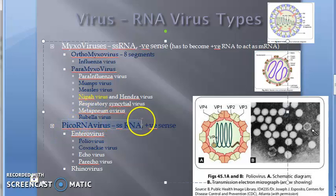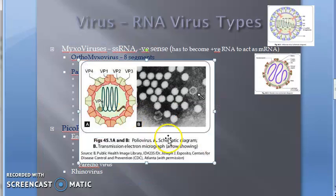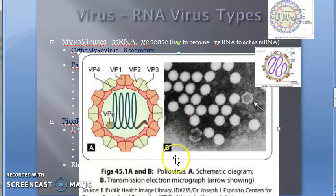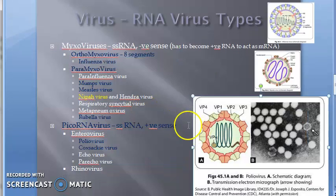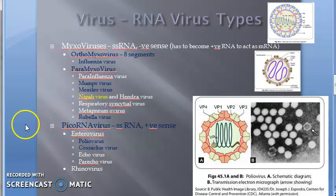Moving on to picoRNA virus. PicoRNA virus has poliovirus — it is an enterovirus with single-stranded RNA. Then you have rhinovirus, which causes the common cold. Interestingly, rhinovirus and poliovirus are both picoRNA viruses.